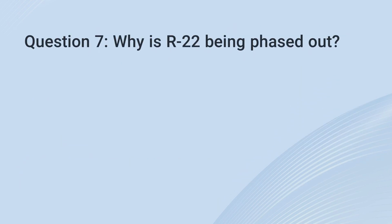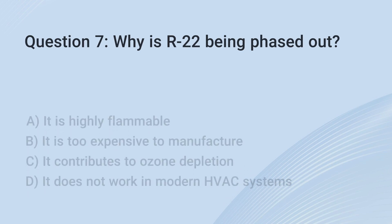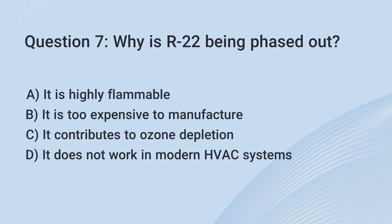Question 7. Why is R-22 being phased out? A. It is highly flammable. B. It is too expensive to manufacture. C. It contributes to ozone depletion. D. It does not work in modern HVAC systems.